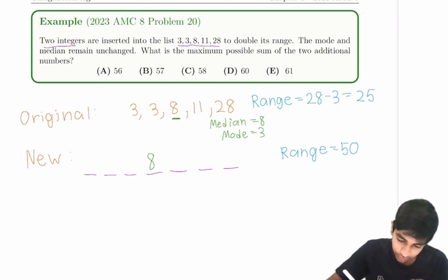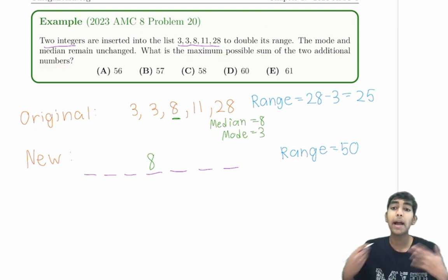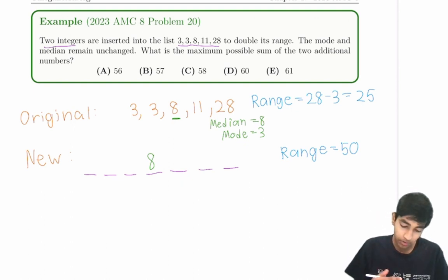So let's first take a look at what the question is asking. The maximum possible sum of the two additional numbers. So we're trying to maximize it, make it as big as possible. So let's consider the highest possible case.